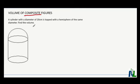In this problem, we have a cylinder with a diameter of 20 centimeters topped with a hemisphere of the same diameter. You're asked to find the volume.